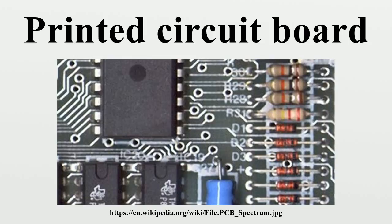Nowadays PCBs are designed with dedicated layout software, generally in the following steps: schematic capture through an electronic design automation tool; card dimensions and template are decided based on required circuitry and the case of the PCB; the positions of the components and heat sinks are determined; layer stack of the PCB is decided, with one to tens of layers depending on complexity; ground and power planes are decided — a power plane is the counterpart to a ground plane and behaves as an AC signal ground while providing DC power to the circuits mounted on the PCB; and signal interconnections are traced on signal planes, which can be on the outer as well as inner layers.